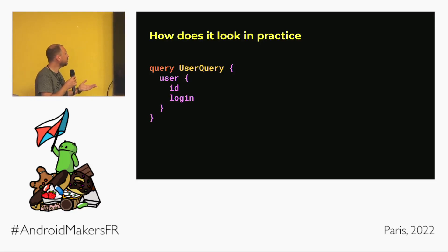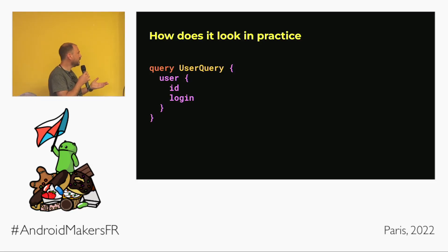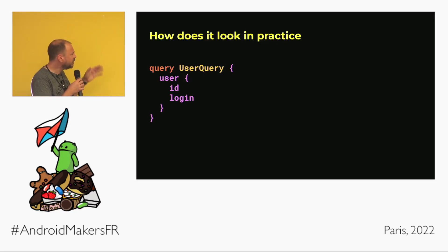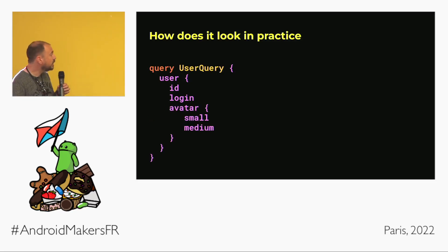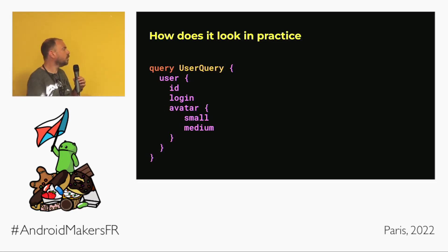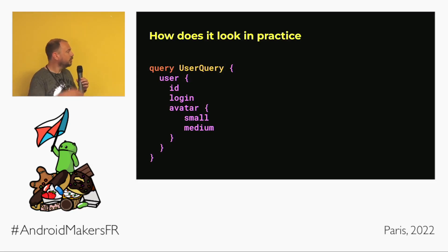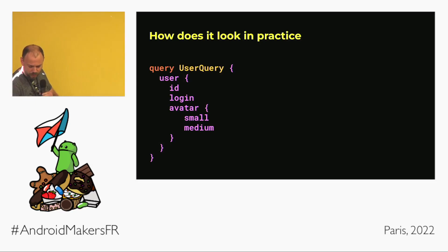In practice, here we have the syntax for a query in GraphQL. You can see it looks a bit like JSON except you only have the keys. In a query you list the fields you're interested in, and if one of those fields is of a complex type you list its fields recursively. It's like a tree structure.